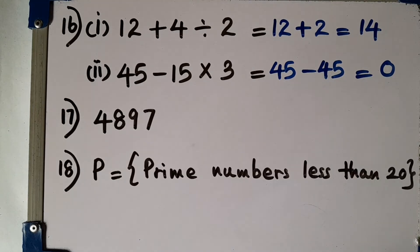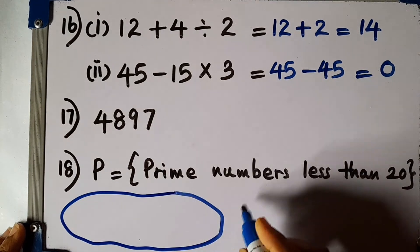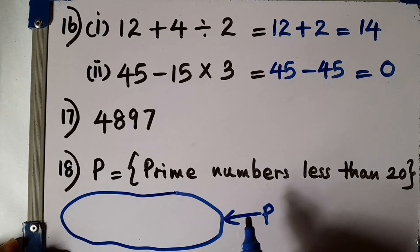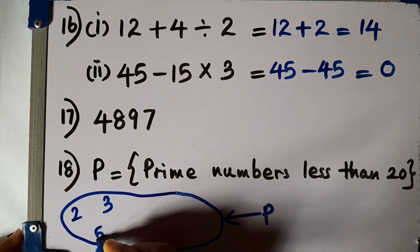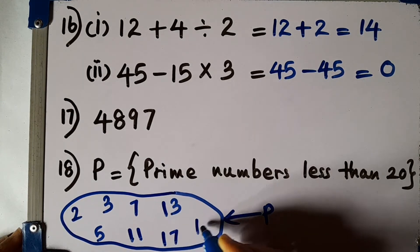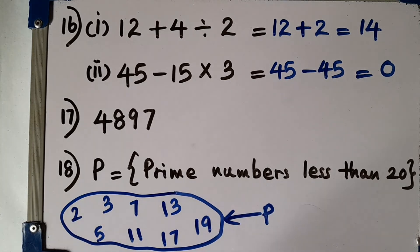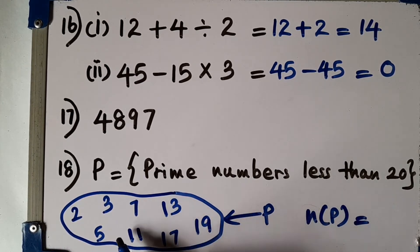Question number 18. The set P is prime numbers less than 20. Represent the set P by a Venn diagram and write the number of elements. I will draw a closed plane figure and name it P. The prime numbers less than 20 are: 2, 3, 5, 7, 11, 13, 17, and 19. The number of elements in the set, n(P), is 8.